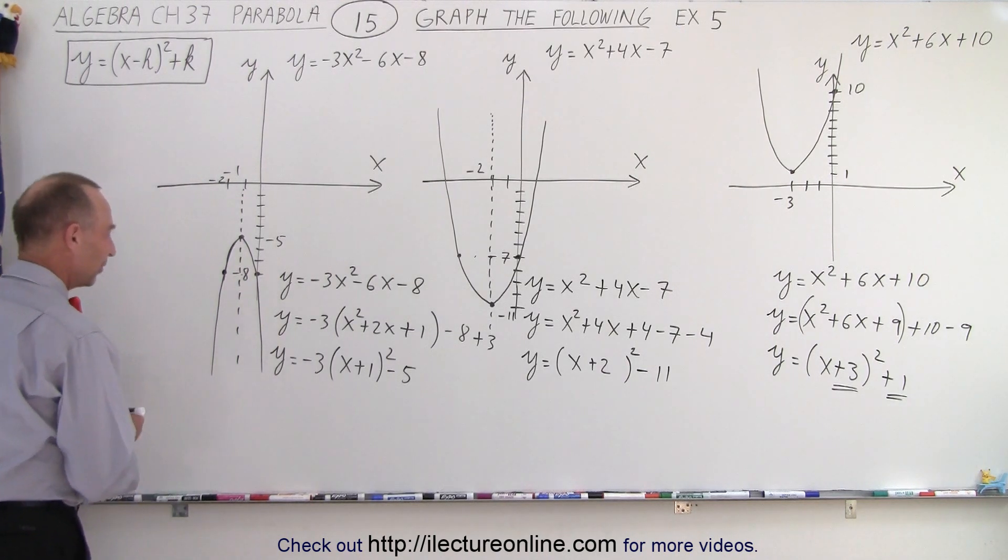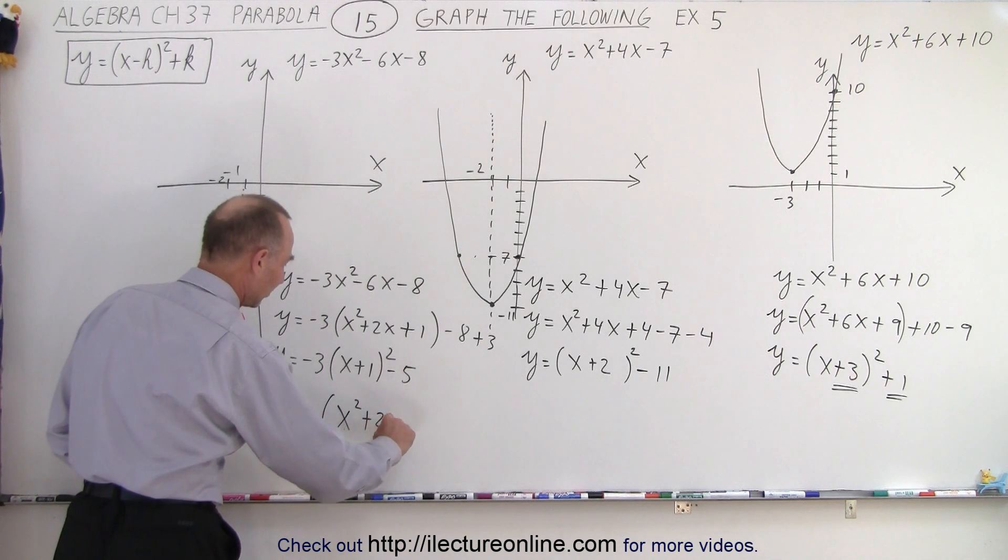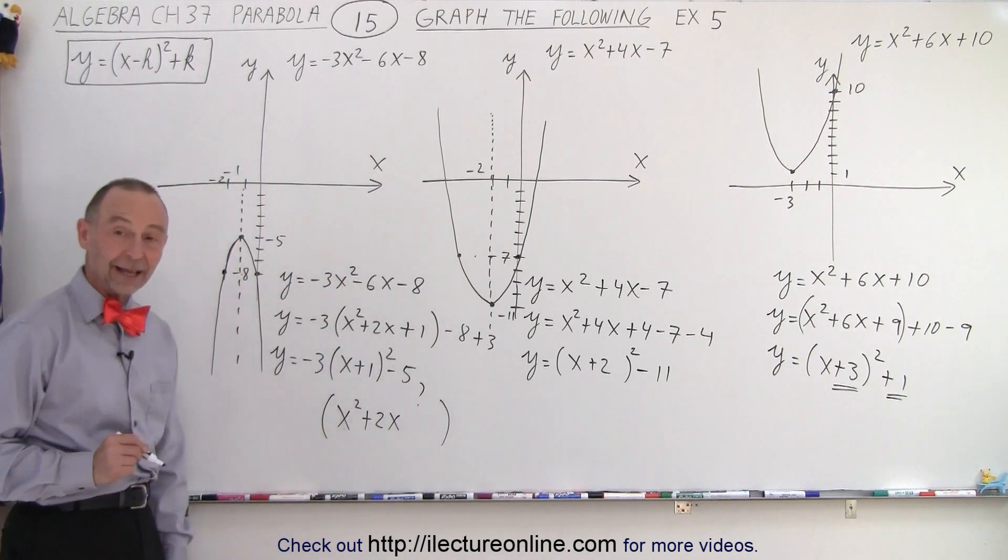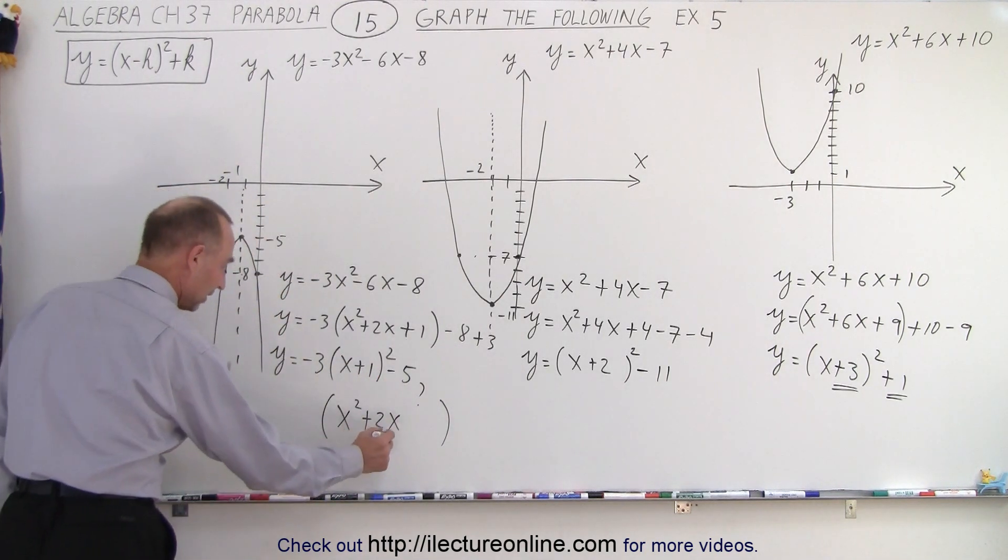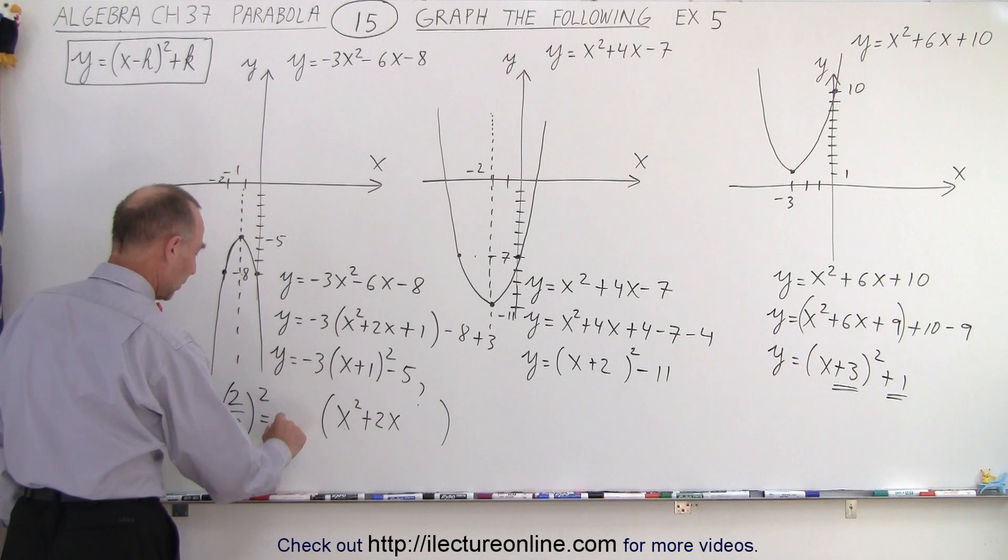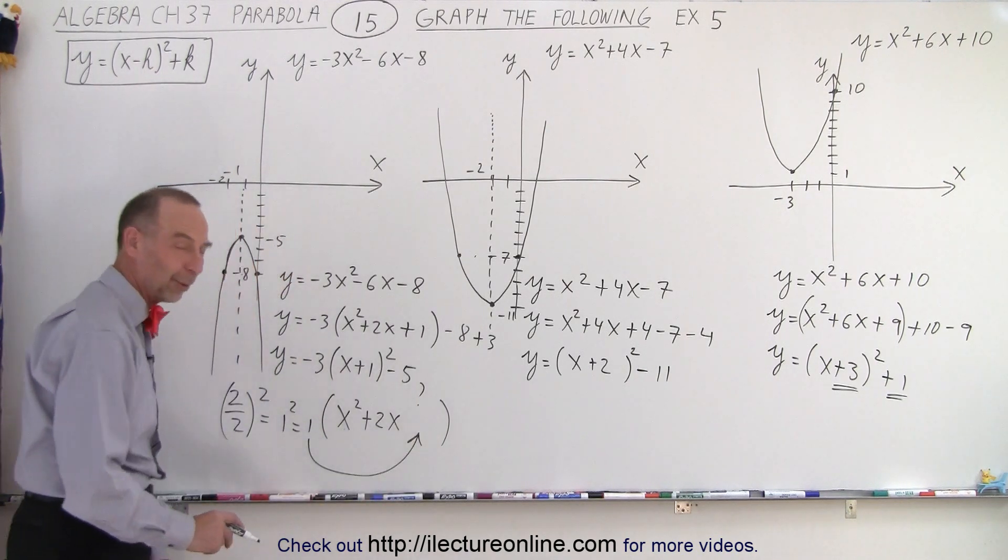So you have the quantity x squared plus 2x and then a blank. So what goes in here? The question is, how do you get that? And so what we do is, what goes in here, you take this number right here, 2 divided by 2, and you square it. So in this case, that would be 1 squared, which is 1, and that goes in here. So that's what you wanted to see. I'll keep that in mind.